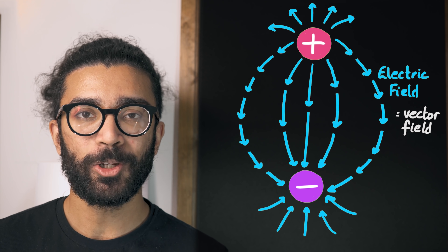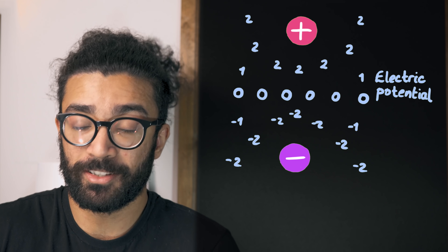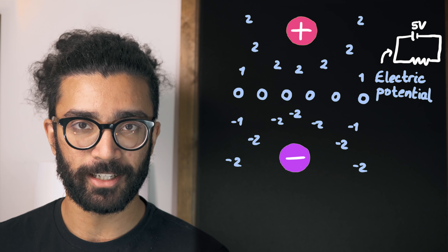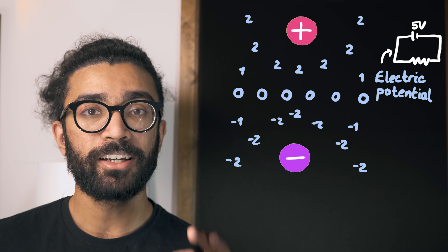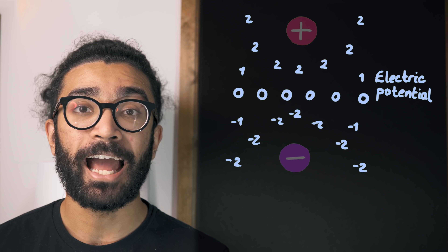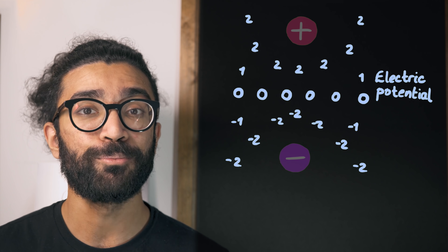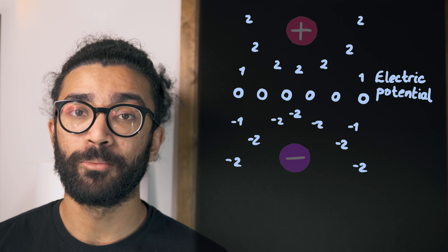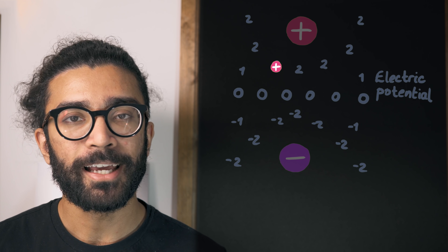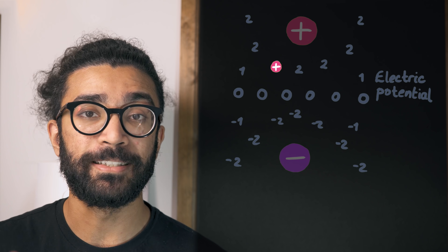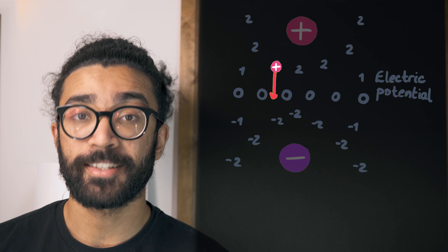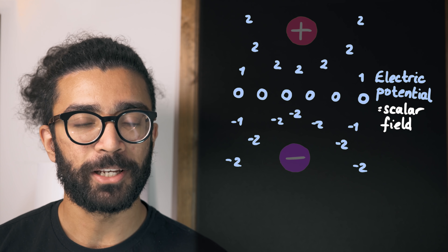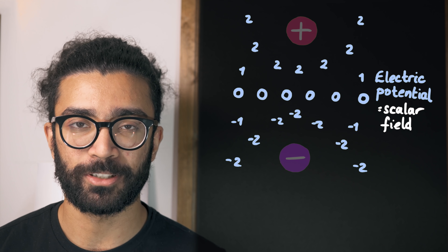The second quantity we're interested in is known as the electric potential. This is exactly the same as the potential, or the voltage, we talk about when dealing with electric circuits. Essentially, we can assign a number to every point in this region of space. And if we were to place a small charged object in this field, it would move in the direction in which the value of the potential field changes most quickly. A potential field is a scalar field because we can assign a scalar, or a number, to every point in space, but it's very closely linked to the electric field.